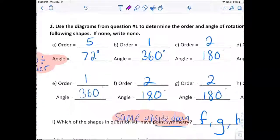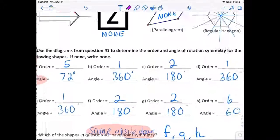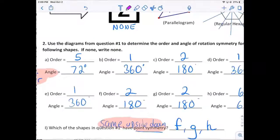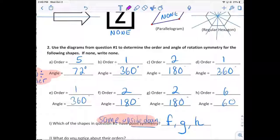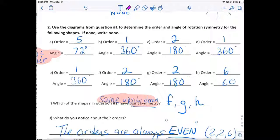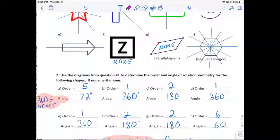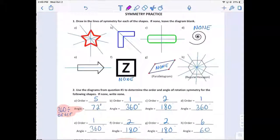So, they're referring to the problems above. So, these eight are referring to these eight. And question I says, which of the shapes have point symmetry? Which ones are the same upside down? And that would be F, G, and H.